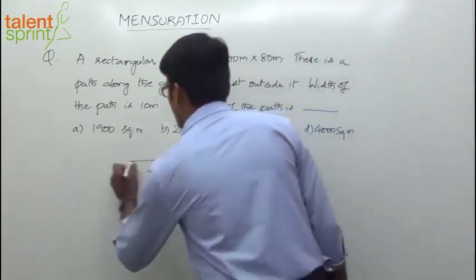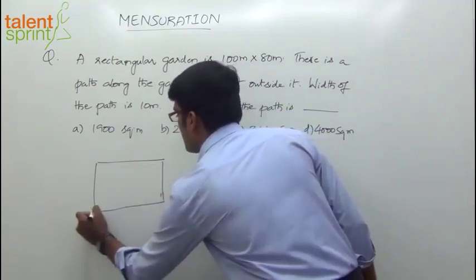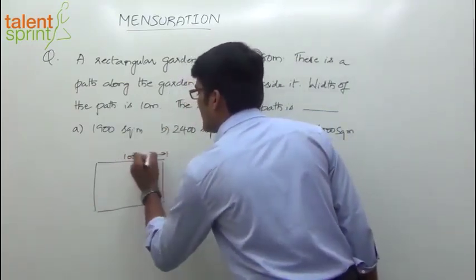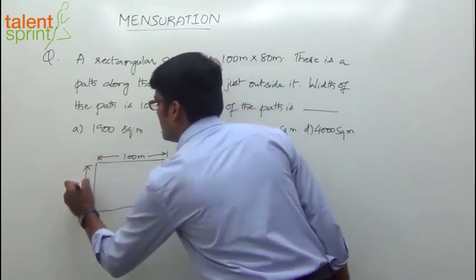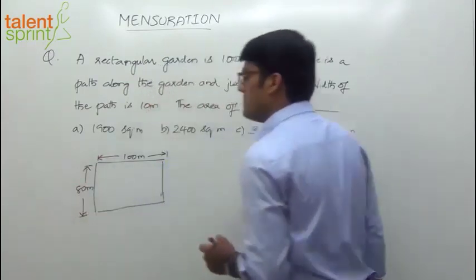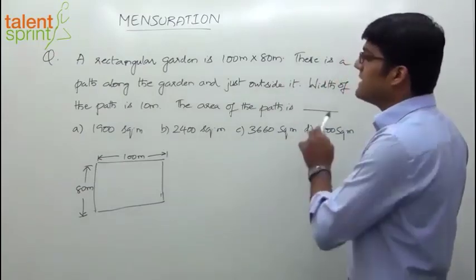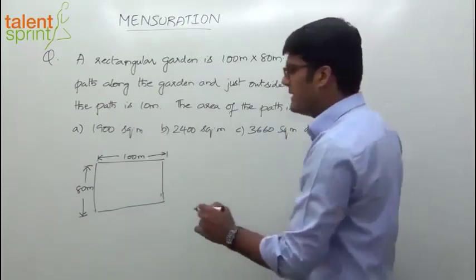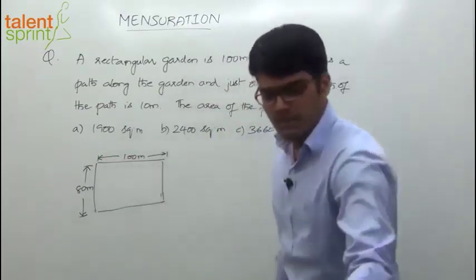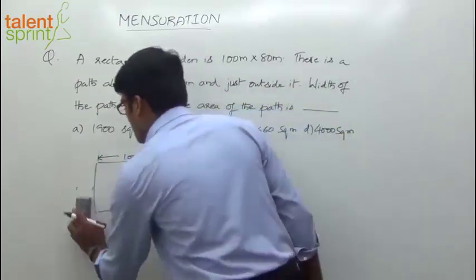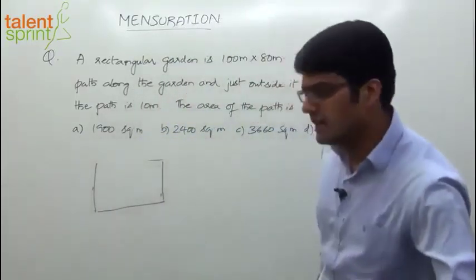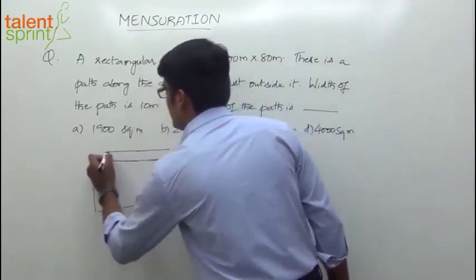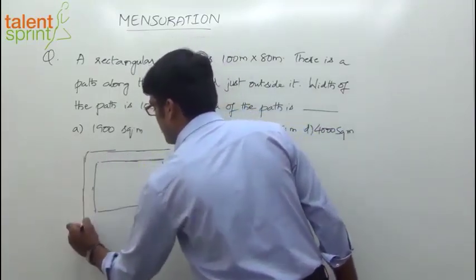So what do you see here? There is a rectangular garden. The dimensions are given to us — 100 meters by 80 meters. So the length here is 100 meters and the breadth is 80 meters. Next, there is a path along the garden and just outside it — basically a footpath or boundary just outside the garden. This is the path just outside the rectangular garden.